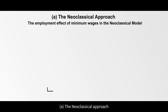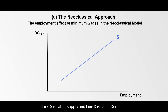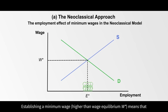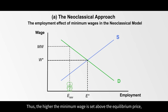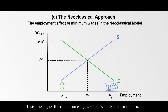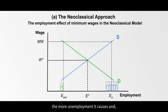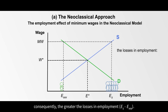The neoclassical approach. Line S is labor supply and Line D is labor demand. Establishing a minimum wage means that employers will hire fewer workers at that wage. Thus, the higher the minimum wage is set above the equilibrium price, the more unemployment it causes, and consequently the greater the losses in employment.